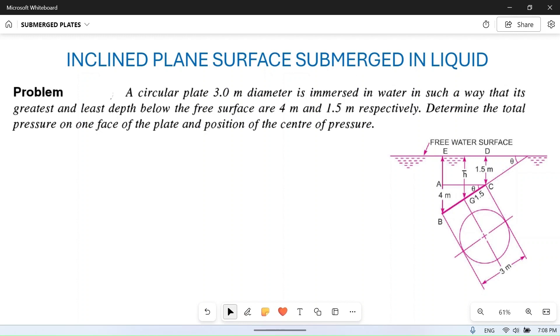Let's read the problem. A circular plate 3 meter diameter, so diameter d is 3 meters, is immersed in water. The liquid is water, so water density is 1000 kg per meter cube.